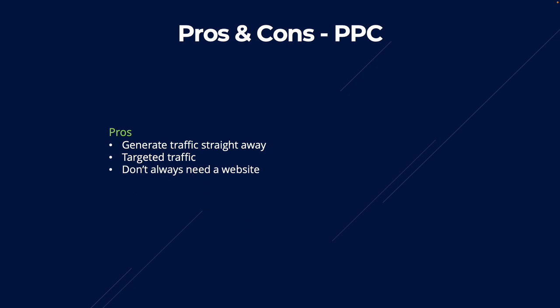You can literally create a Google ad and send the traffic directly to your affiliate offer — whether that's your affiliate link on Amazon or your affiliate link's landing page. The choice is completely down to you.